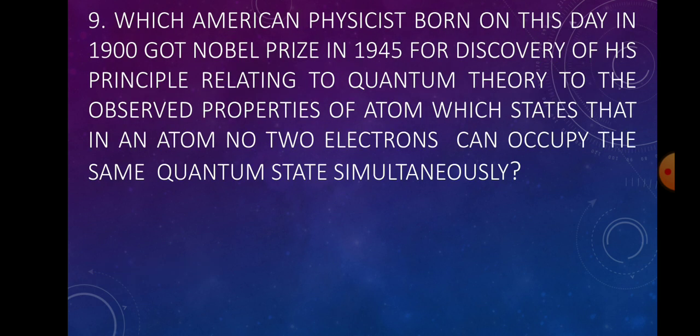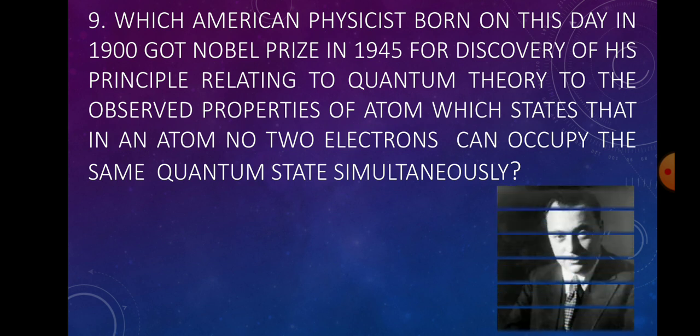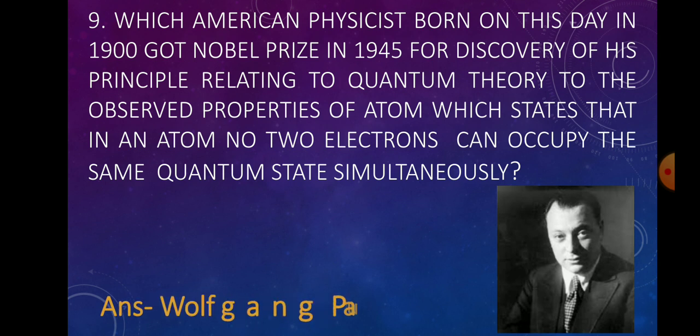Question number nine: Which American physicist, born on this day in 1900, received the Nobel Prize in 1945 for the discovery of his principle relating quantum theory to the observed properties of atoms, which states that no two electrons in an atom can occupy the same quantum state simultaneously? Answer: Wolfgang Pauli. The principle is known as Pauli's Exclusion Principle.